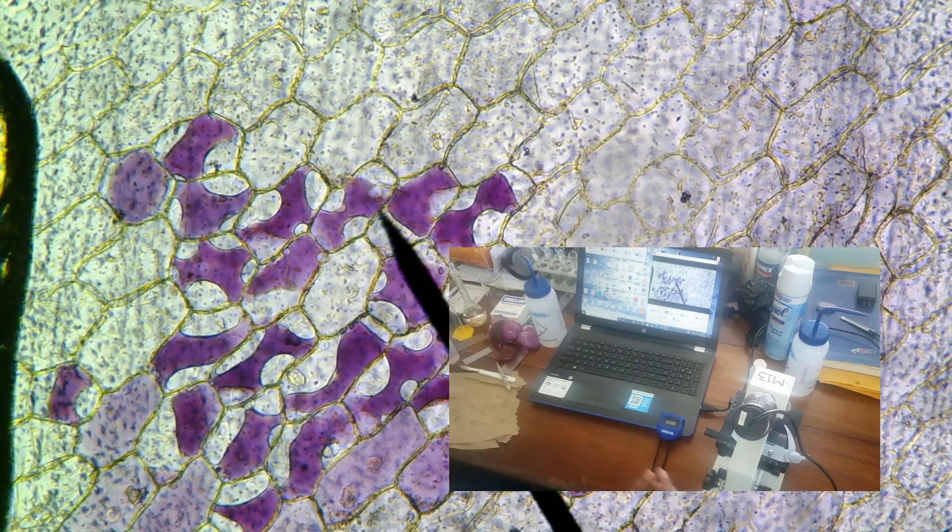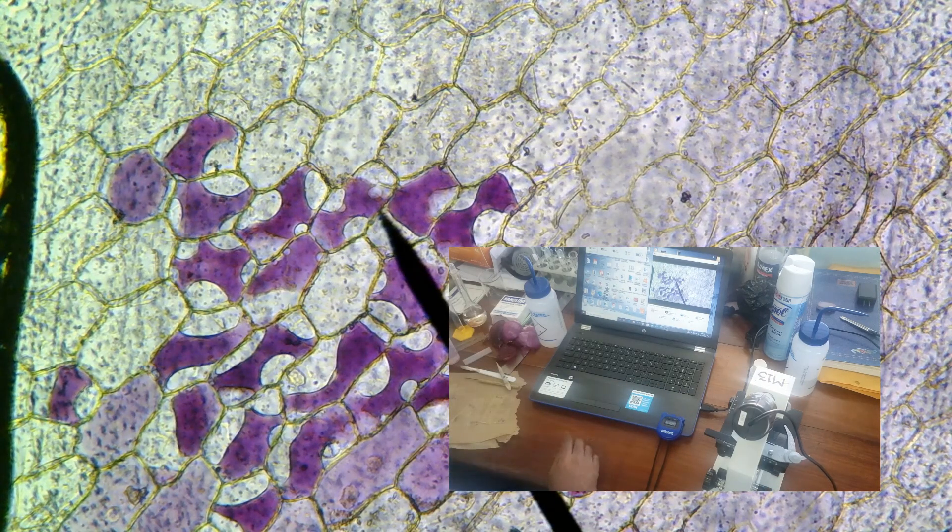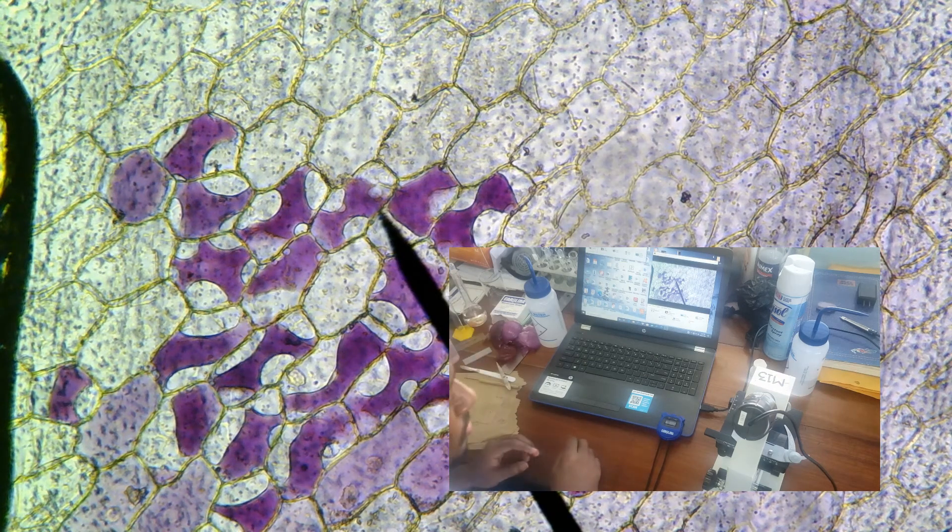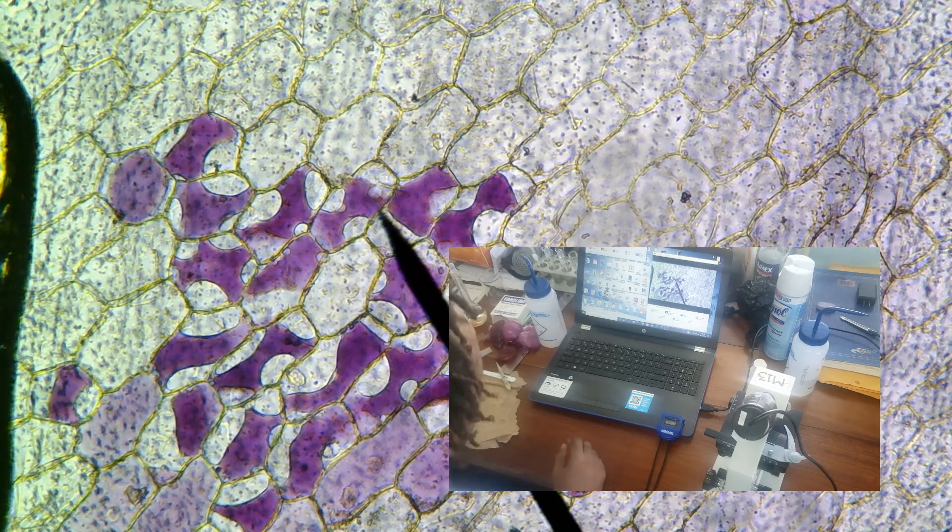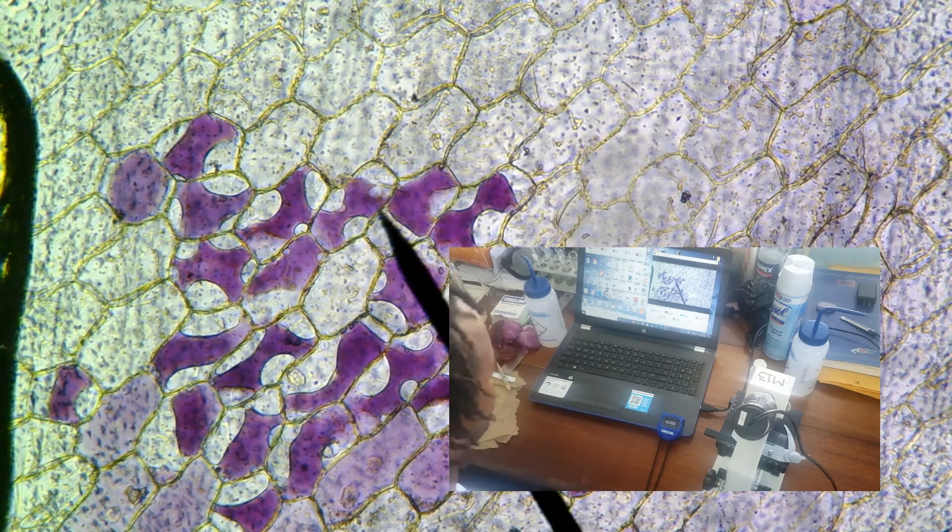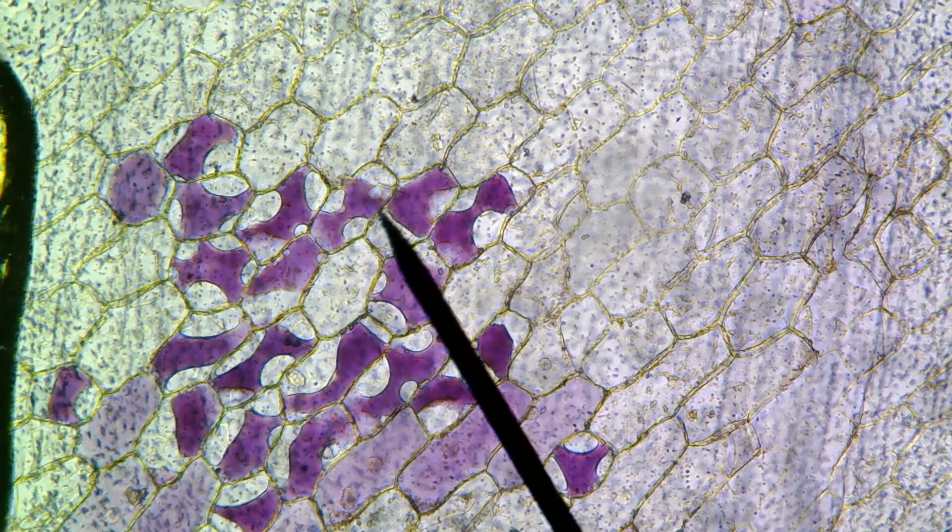So what we're searching for are sections like this, where the purple color can be shown inside the cytoplasm of the cell. And we can clearly see where the cell membrane has shrunken away from the cell wall.